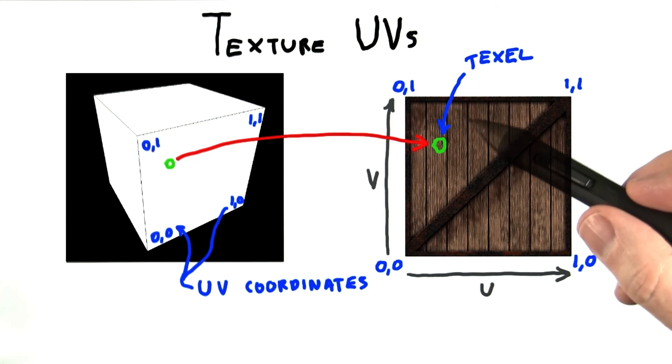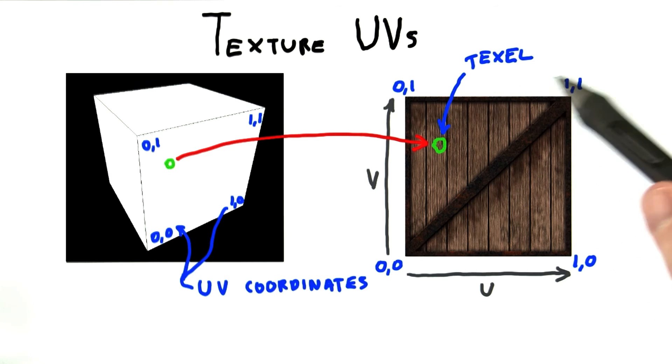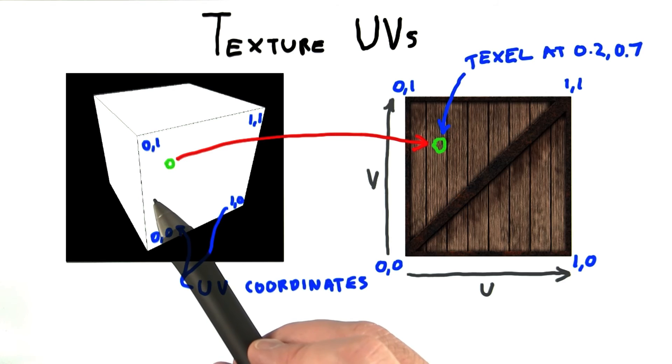A pixel in a texture is often called a texel to differentiate it from a pixel on a screen. For example, on this face of the box, we want to find the texel color to use for this pixel.